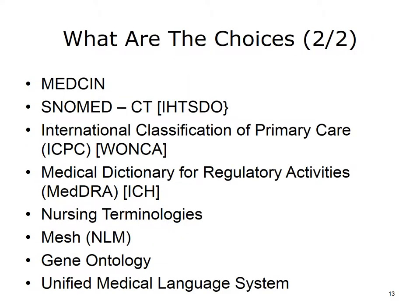The list continues: SNOMED CT, IHT SDO; International Classification for Primary Care (ICPC), WONCA; Medical Dictionary for Regulatory Activities (MedDRA), ICH; Nursing Terminologies; MeSH, NLM; Gene Ontology (GO); and Unified Medical Language System (UMLS). Other sources of terminology include HL7 Tables and the United States Health Information Knowledge Base (USHIK), funded and directed by the Agency for Healthcare Research and Quality (AHRQ), with management support in partnership with the Centers for Medicare and Medicaid Services.